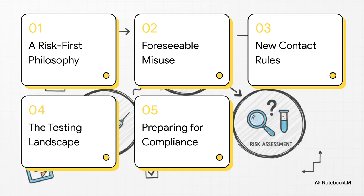Okay, so to really get our heads around what's happening, here's our game plan. We're going to start with the massive philosophical change that's at the very heart of this thing. Then we'll dive in and decode this brand new concept of foreseeable misuse. After that, we'll look at the new rules for contact and bioaccumulation, see what's changed in the world of testing, and finally, and most importantly, we'll give you an action plan for what to do next.